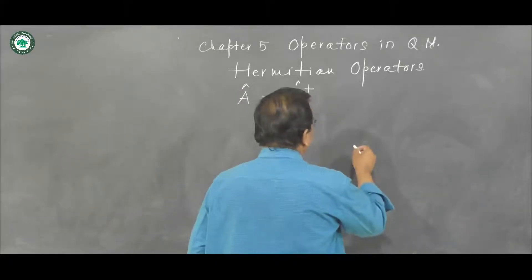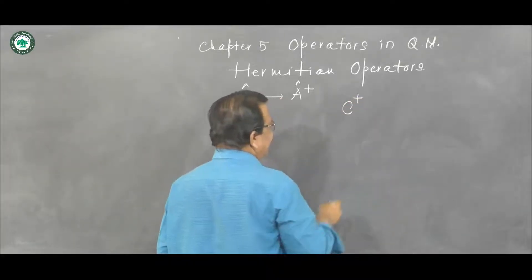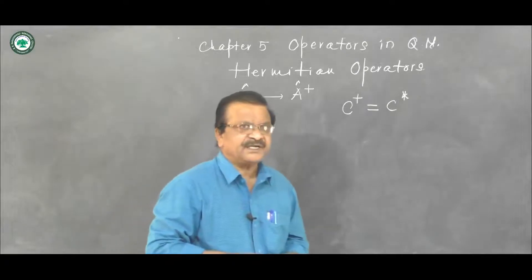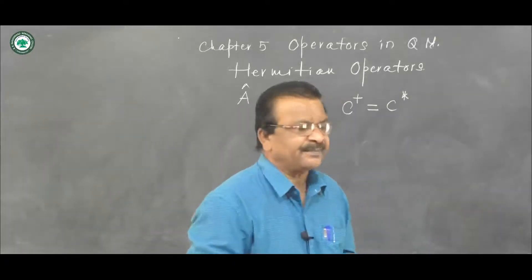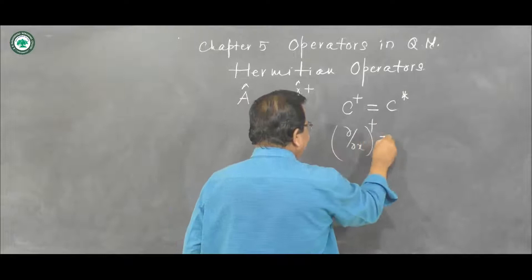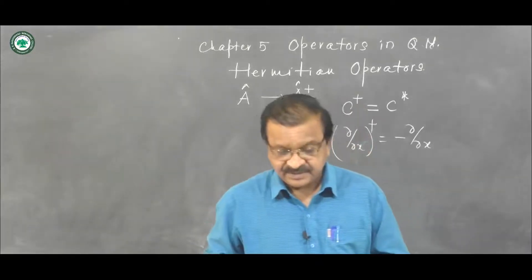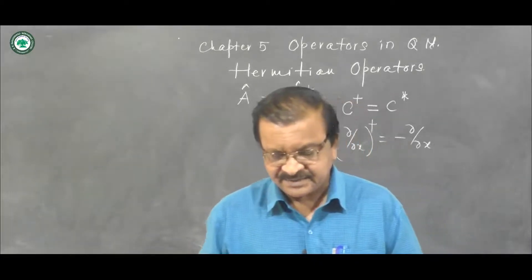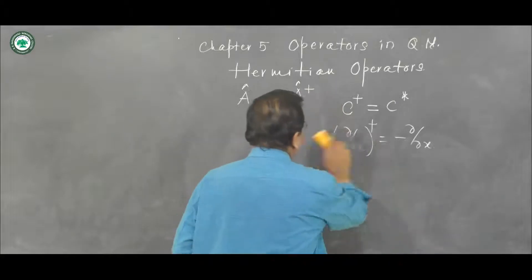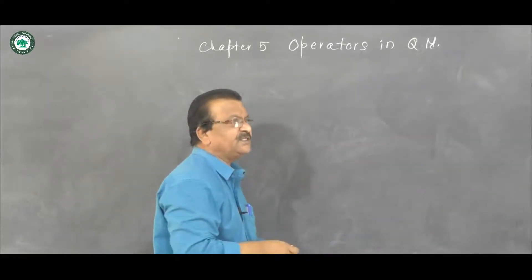Here are some examples. If an operator is a complex number c, then its Hermitian adjoint c dagger is its complex conjugate. For a complex number, its Hermitian adjoint is its complex conjugate. If you have the differential operator d/dx, then its Hermitian adjoint is minus d/dx. So there is no concrete relationship between the Hermitian adjoint and the given operator — many times it is an entirely different operator. This leads us to the definition of Hermitian adjoint, also called Hermitian conjugate.